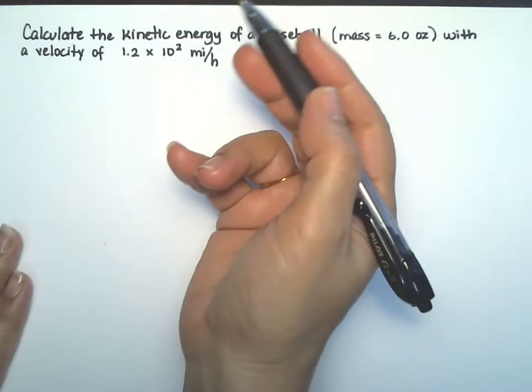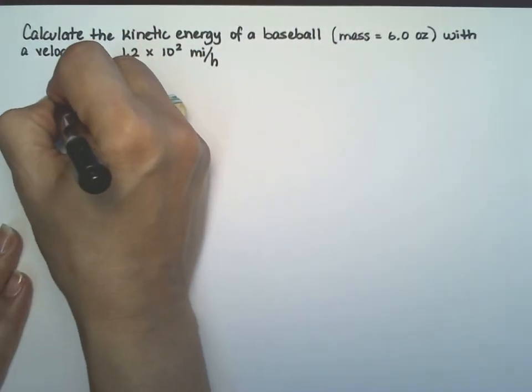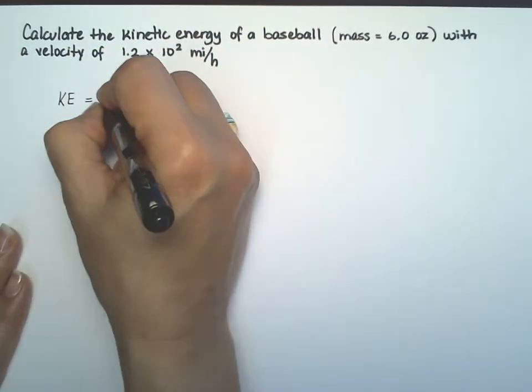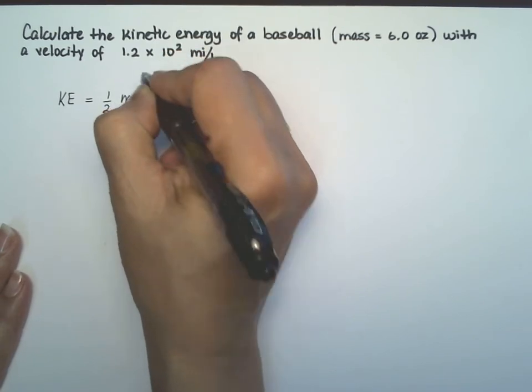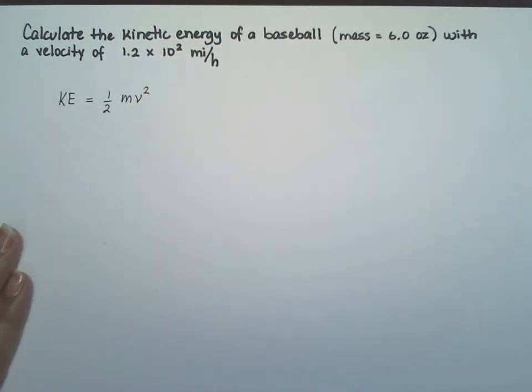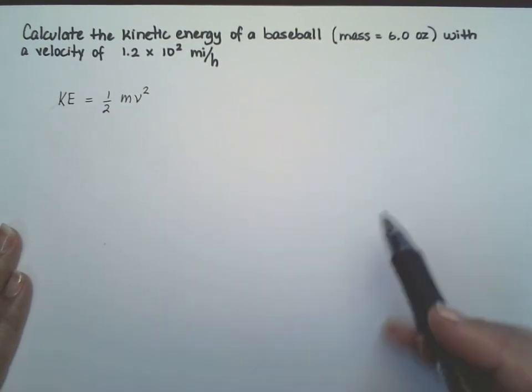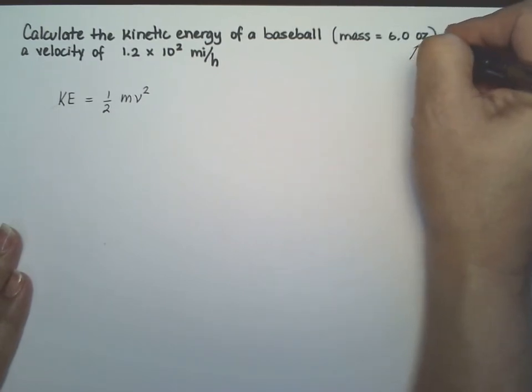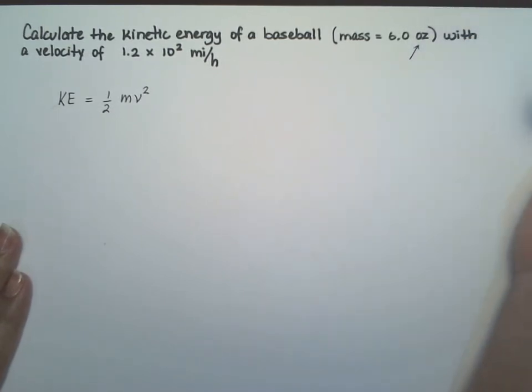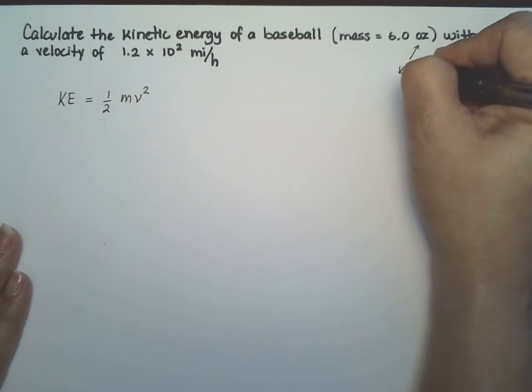It's kinetic energy, so we know the equation that we need. Kinetic energy is half the product of mass and the velocity squared. So that is the kinetic energy. Okay, little things that they did. They gave us the mass in ounces. We're going to need to change that to an SI unit. So we're going to need this in kilograms.